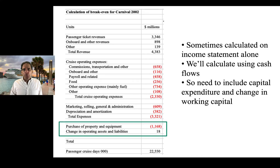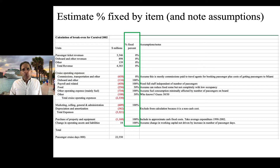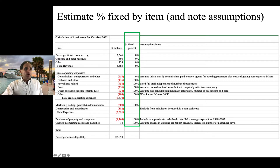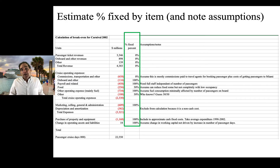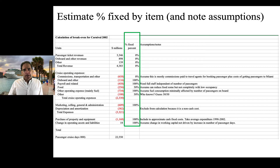So now we've established the sources and uses of cash. The next thing we're going to do is estimate what percentage of each of those sources and uses of cash is fixed. We're simply asking: what percentage, from zero to 100, of each line item is fixed? For example, our passenger ticket revenue — zero percent is fixed, since we only get that revenue if we get a new customer. If we look at payroll and related expenses, that's essentially 100 percent fixed: whether you have one passenger on the ship or the ship is full, you need to have the staff — the captain, the crew. Those costs don't vary based on the number of passenger cruise days sold. It's useful to note any assumptions you're making for your own records and when sharing the analysis with others.